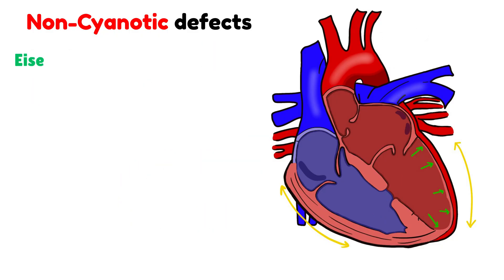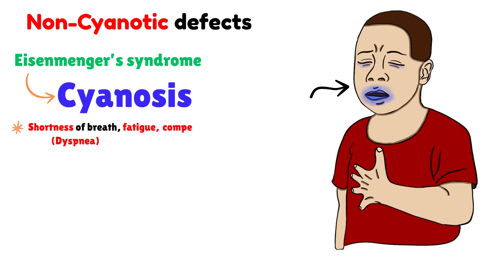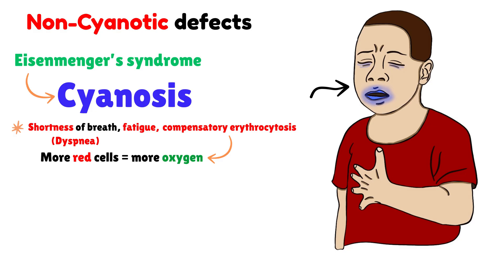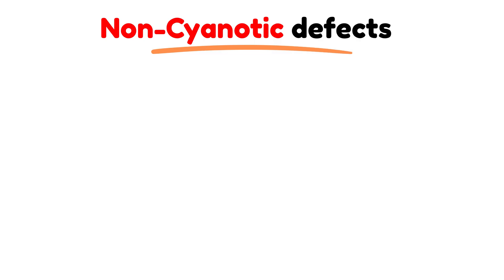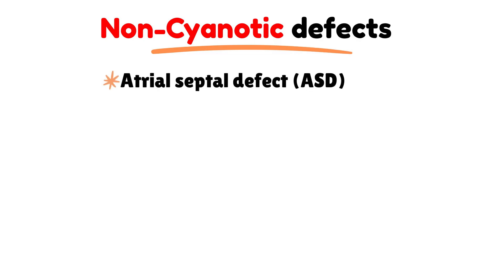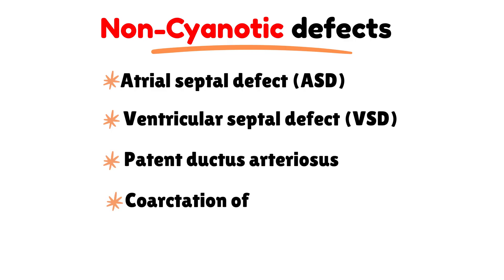From a clinical perspective, Eisenmenger's syndrome manifests through cyanosis, which is the bluish discoloration of the lips and skin. Other common symptoms include shortness of breath, fatigue, and compensatory erythrocytosis, meaning that the body produces more red blood cells in an attempt to carry additional oxygen. In later stages, after cardiac insufficiency develops, fainting episodes or syncopal attacks may also appear. The main congenital heart diseases in this non-cyanotic group are the atrial septal defect, the ventricular septal defect, the patent ductus arteriosus, and the coarctation of the aorta.